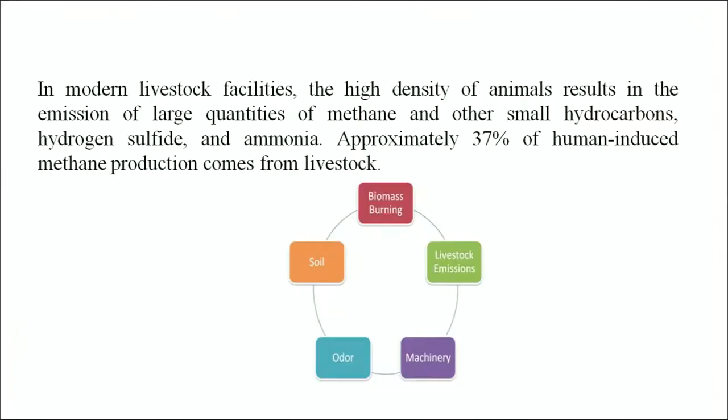In modern livestock facilities, the high density of animals results in the emission of large quantities of methane and other small hydrocarbons, hydrogen sulphide and ammonia. Approximately 37 percent of human-induced methane production comes from livestock. Serious ecological implications and health risks are also associated with industrial air pollution, fast-depleting ozone layer, and its implications on human health, as discussed in lesson 10.